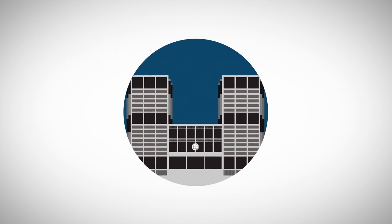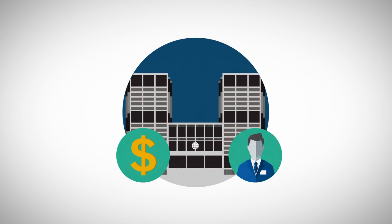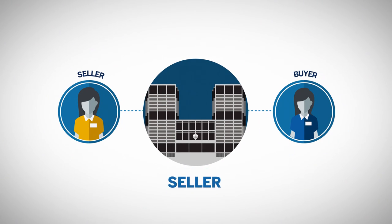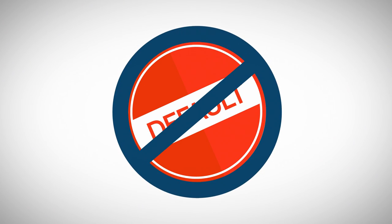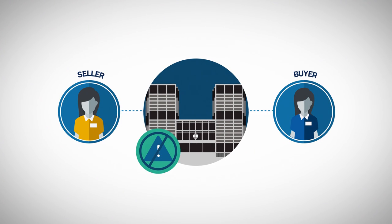Every exchange-traded futures contract is centrally cleared. This means that when a futures contract is bought or sold, the exchange becomes the buyer to every seller and the seller to every buyer. This greatly reduces the credit risk associated with the default of a single buyer or seller. The exchange thereby eliminates counterparty risk and, unlike a forward contract market, provides anonymity to futures market participants.